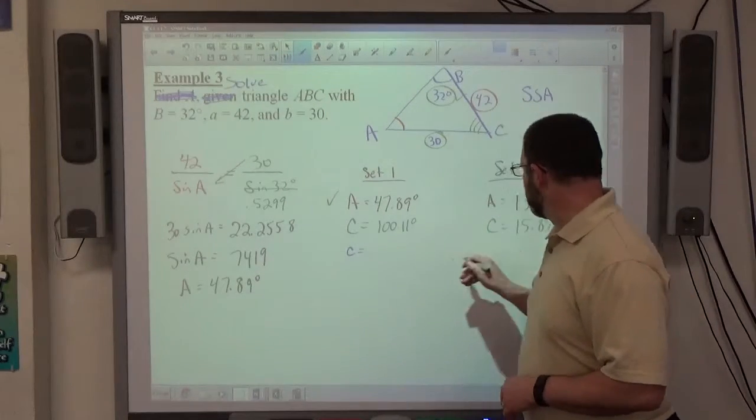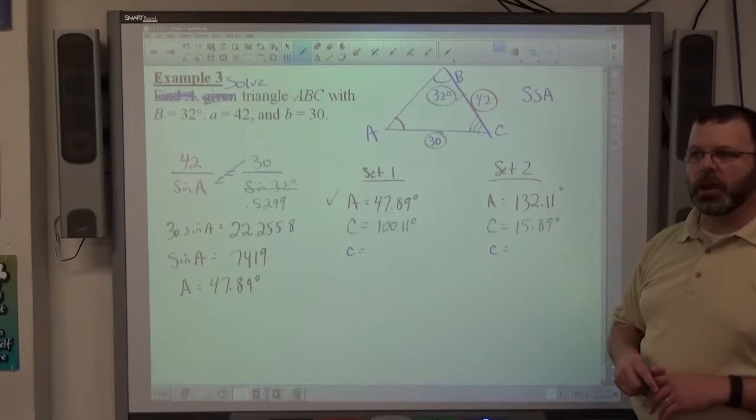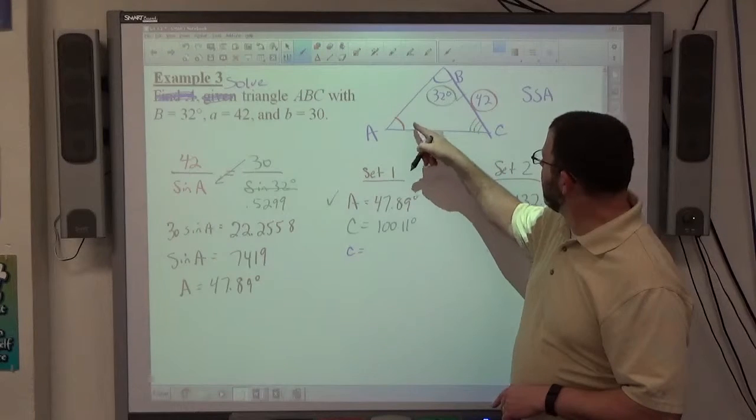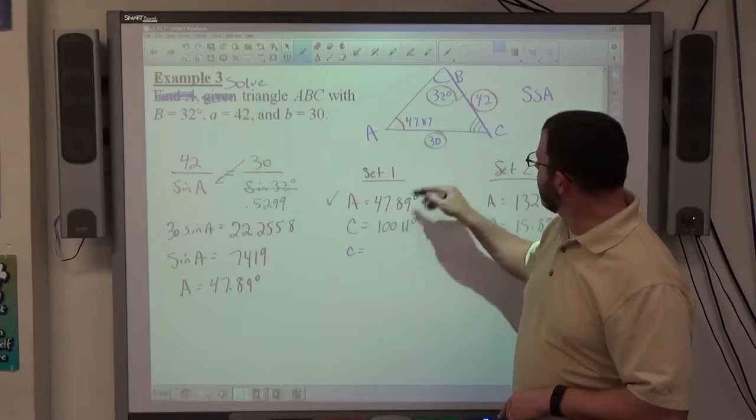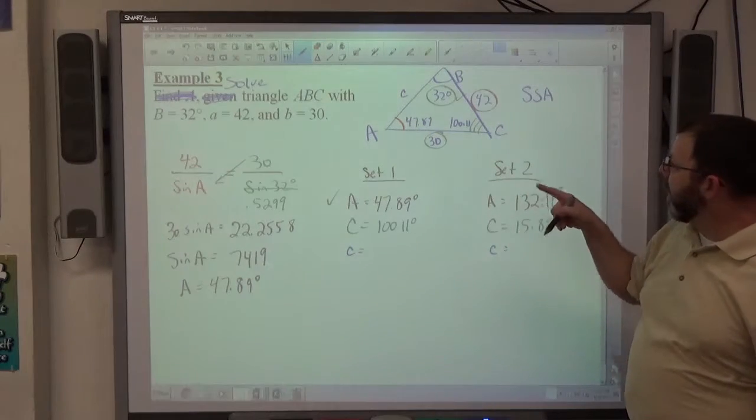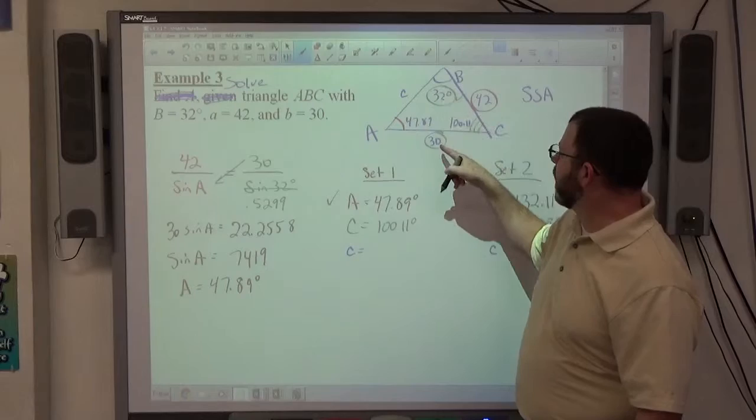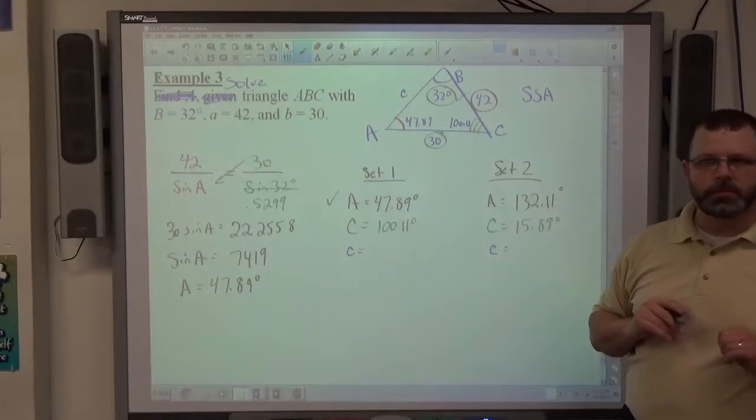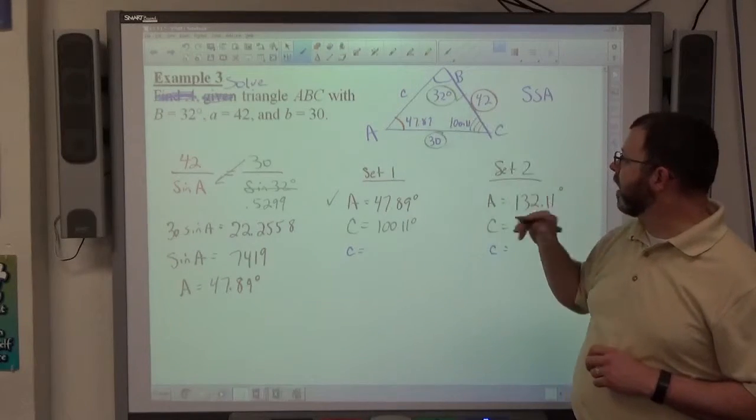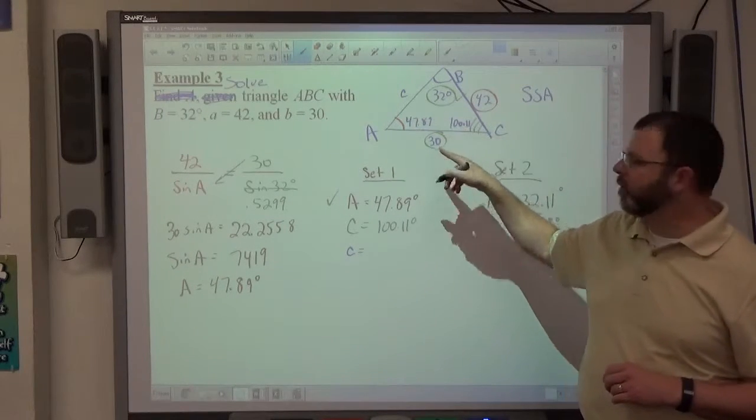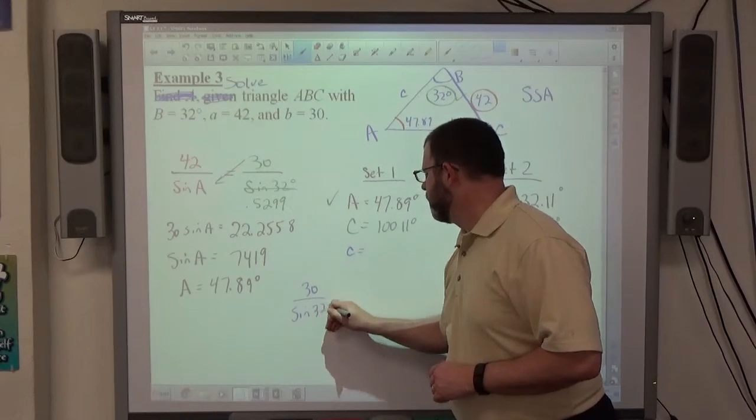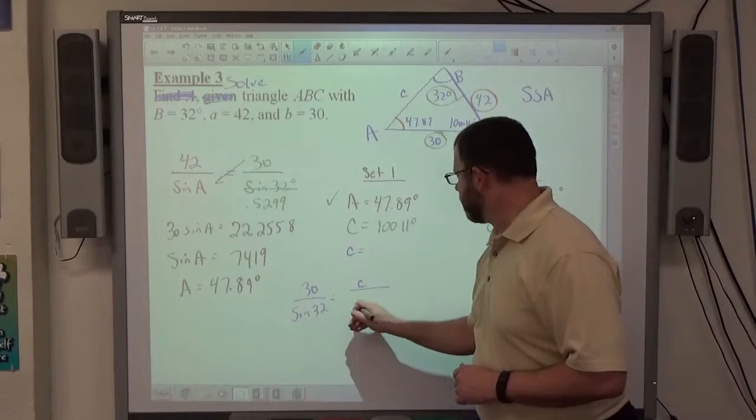So little c equals, little c equals. To find little c, we just use the law of sines again. If I know this is 47.89 here, and I know this is 100.11, and I'm trying to find C, there's a whole bunch of information in there. Any side over sine of its opposite angle, I'm going to use 30 and 32 because those are exactly right. Where 47.89 and 42 are approximate. Any time I can use exact, it's always better. So 30 over sine of 32 is equal to C, we don't know yet, over sine of 100.11.